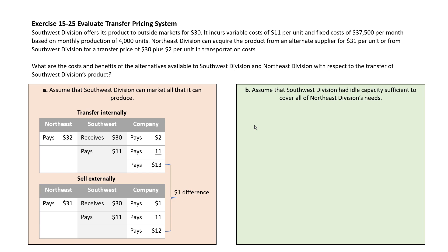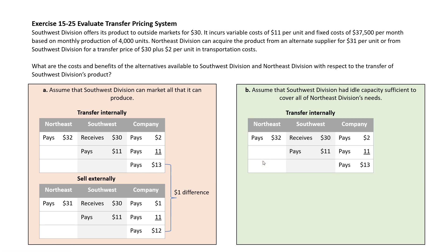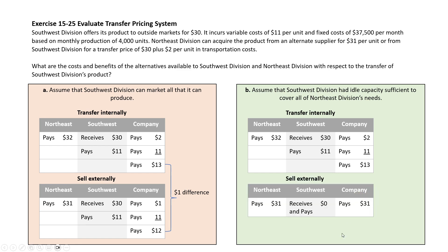What if Southwest Division has idle capacity? That means they aren't turning away business if they take on Northeast's business. If they do transfer internally, all the same numbers carry over from Part A — the overall cost to the company is still $13, being the transportation cost plus the $11 variable cost. But what changes is if Southwest has idle capacity and decides not to sell to Northeast: Northeast pays the alternate supplier $31, and Southwest gains nothing from anyone else. The overall cost to the company is $31 — a difference of $18 ($31 minus $13) in favor of transferring internally.